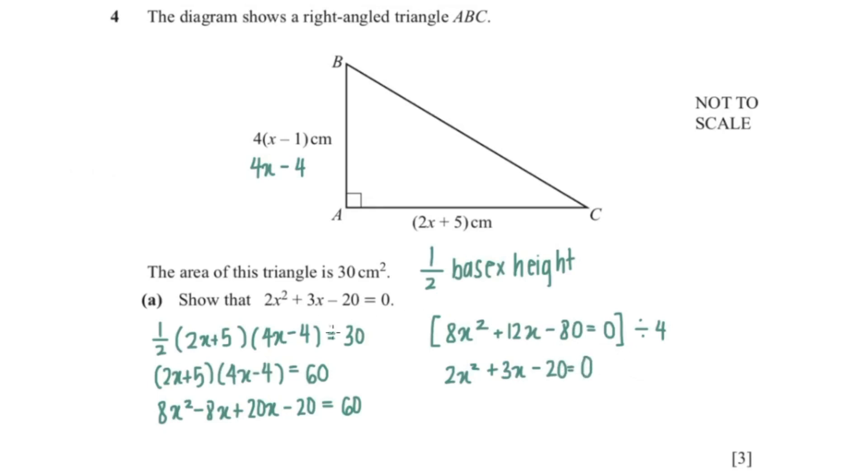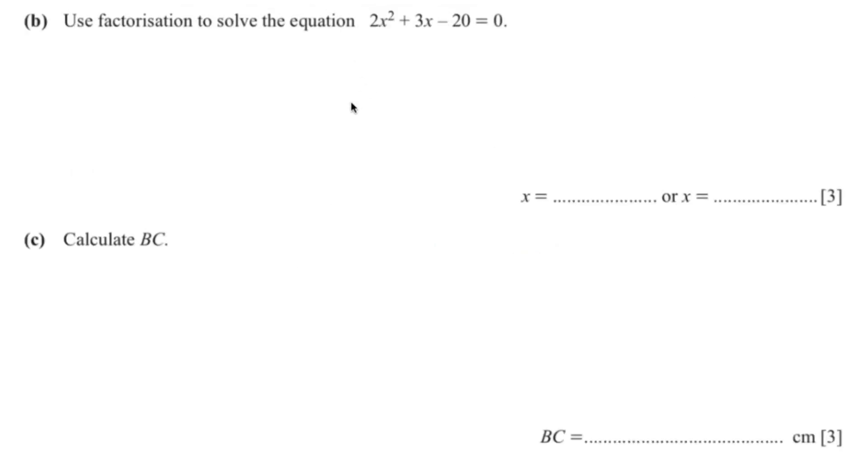And there we've shown that 2x squared plus 3x minus 20 equals 0. So the next question wants us to factorize and solve the equation 2x squared plus 3x minus 20. So that is 3x, that is negative 20, and that is 2x squared. So this would be 2x squared times x.